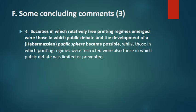Three. One variable of particular importance in discussing both the spread and impact of printing is what Jürgen Habermas has called the public sphere. Societies in which relatively free printing regimes emerged were those in which public debate and the development of a public sphere became possible, whilst those in which printing regimes were restricted were also those in which public debate was limited or prevented. The freedom to print and the freedom to discuss issues of public importance were related, and were seen to be related as printing came to be seen as potentially disruptive of established order. The emergence of the public sphere could be contested, as it was in England, or reversed, as it was in Venice.